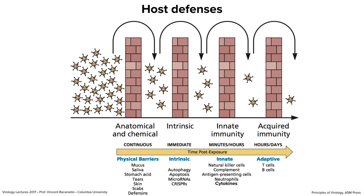Here is my simplified diagram of the immune system — four brick walls representing host defenses. First we have anatomical and chemical defenses, which are always with us. They comprise physical barriers like mucus, saliva, stomach acid, tears, skin, scabs, and proteins in your skin called defensins, which have antimicrobial properties. First discovered in frogs, which have amazing antimicrobial peptides in their skin.